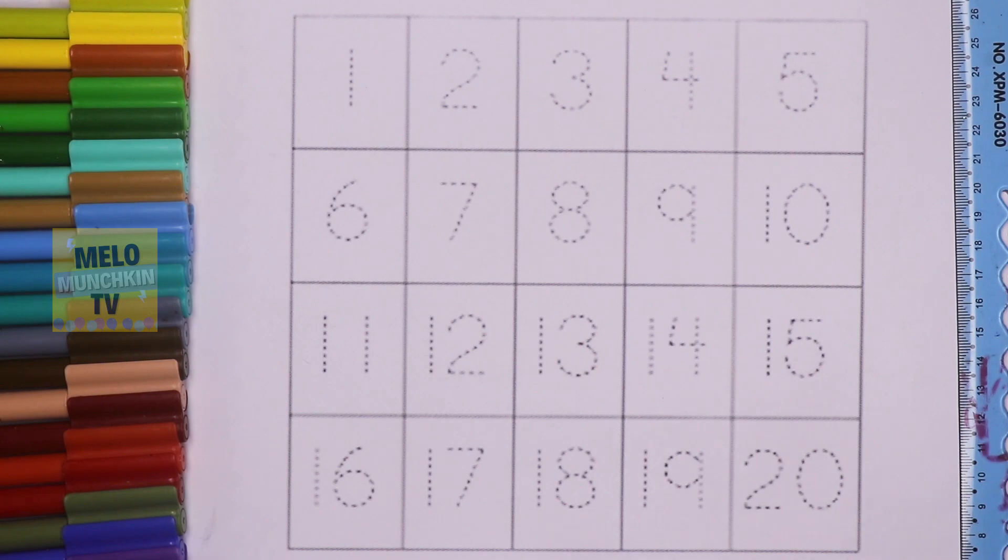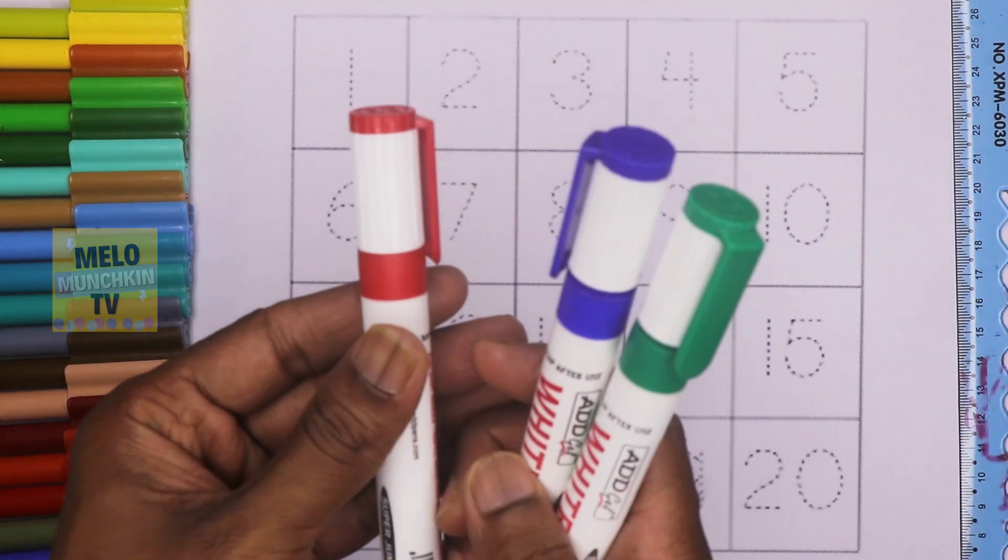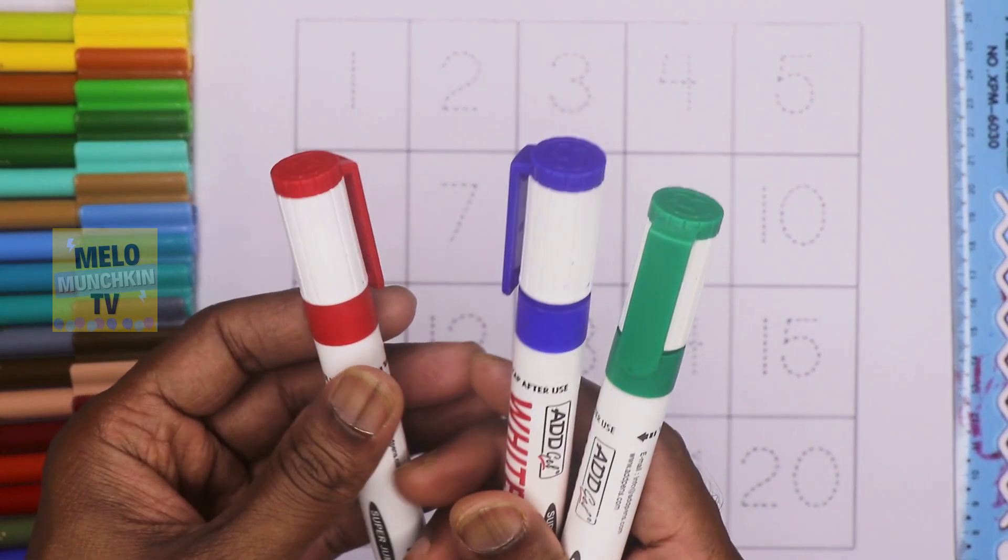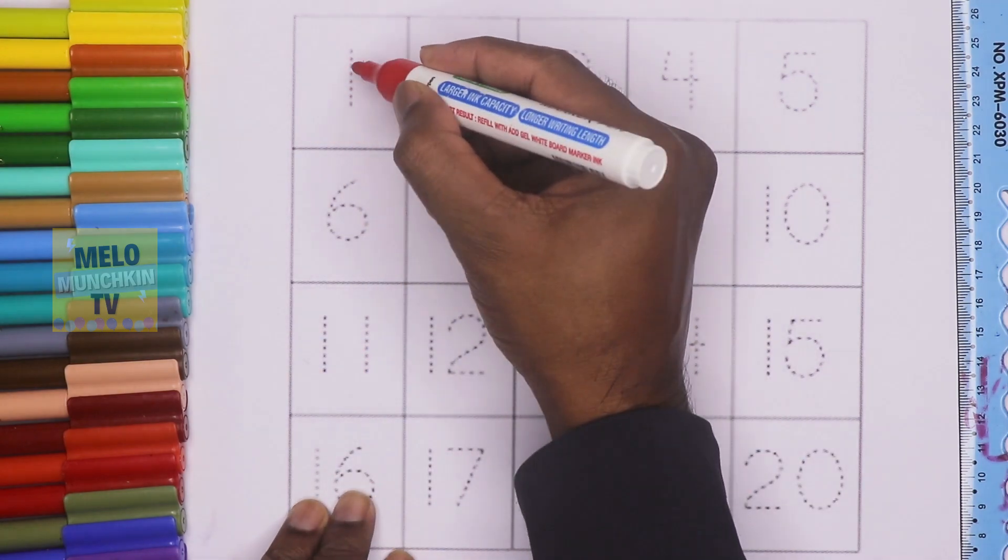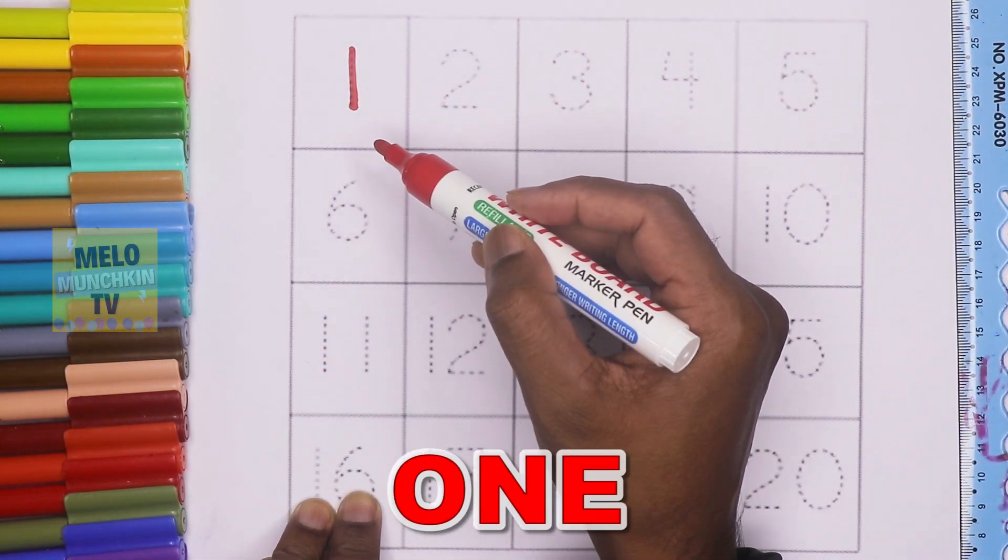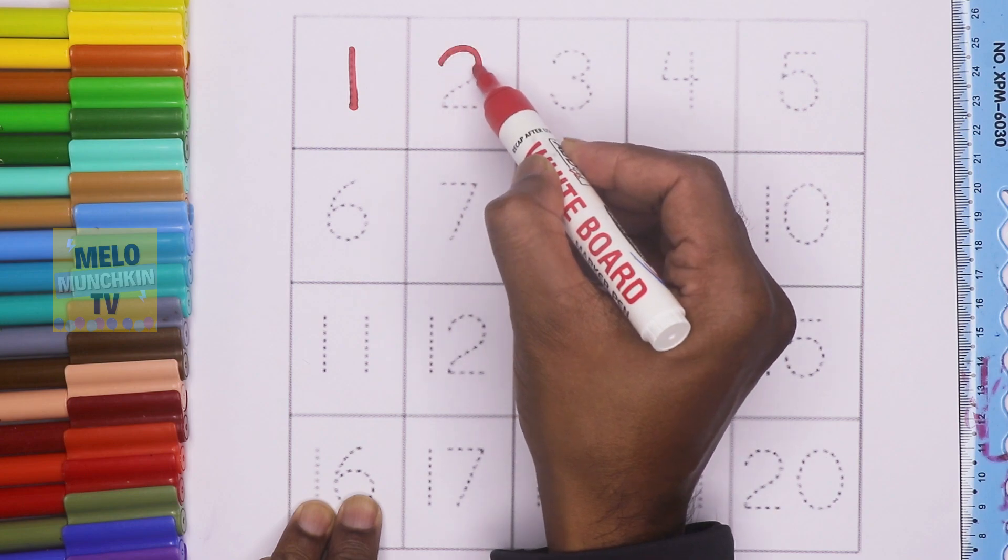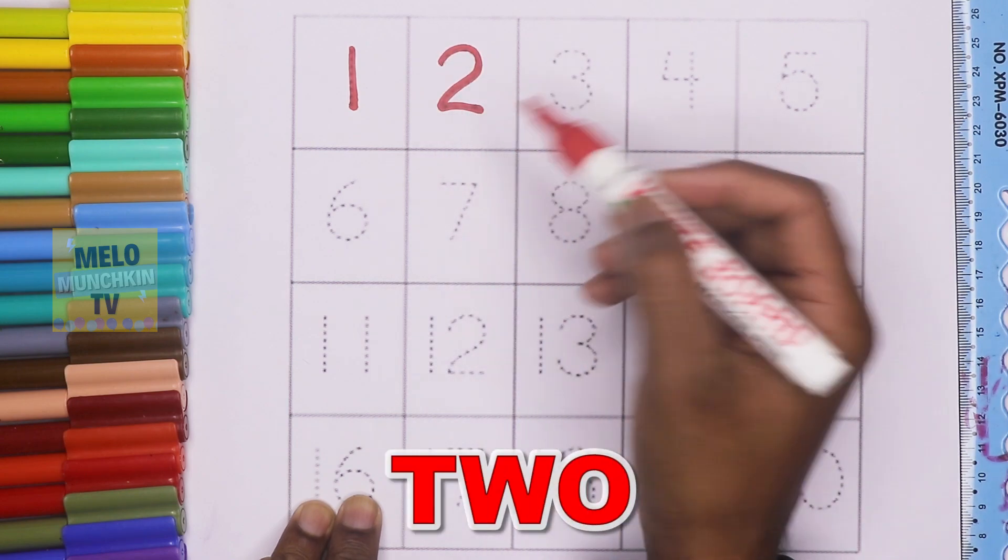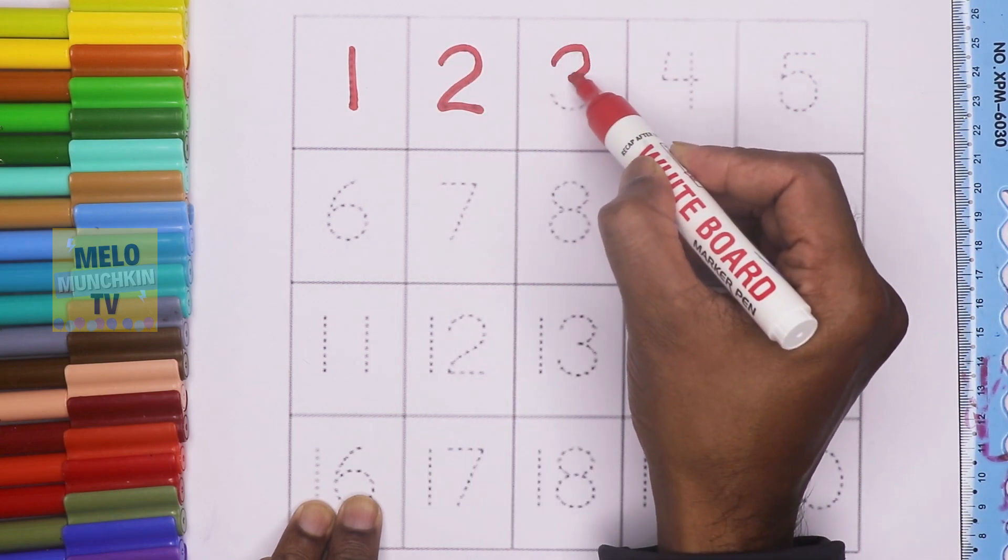We'll use three colors: red, blue and green. So let's start. This is number one. O-N-E-1. This is number two. T-W-O-2.